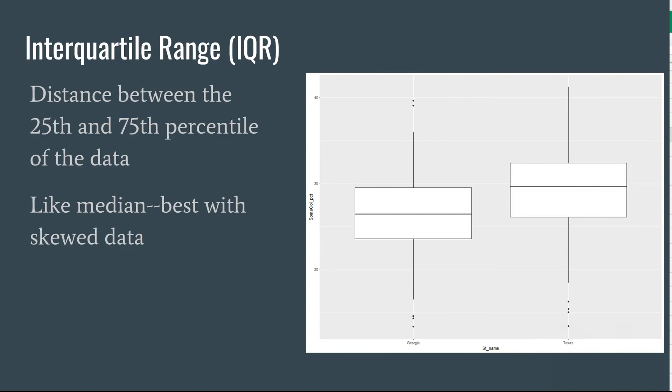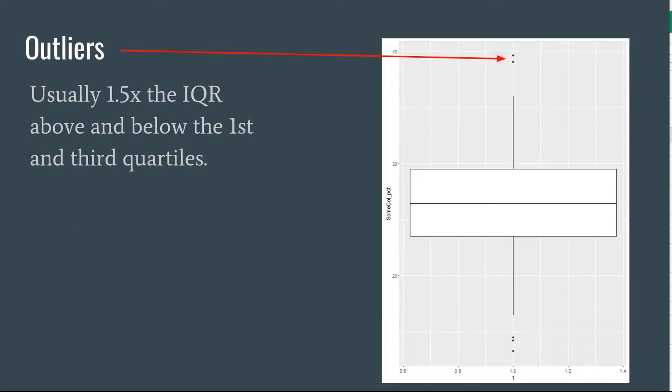Interquartile range is one other measure. This is kind of like median, so it's not so sensitive to outliers. Standard deviation can be really affected by the fact that you might have one observation that's really far out that has a really high distance. What interquartile range does is it basically measures what's the top to the bottom of this box right here. It says take the value of the 25th and the 75th percentile and measure the distance between them.